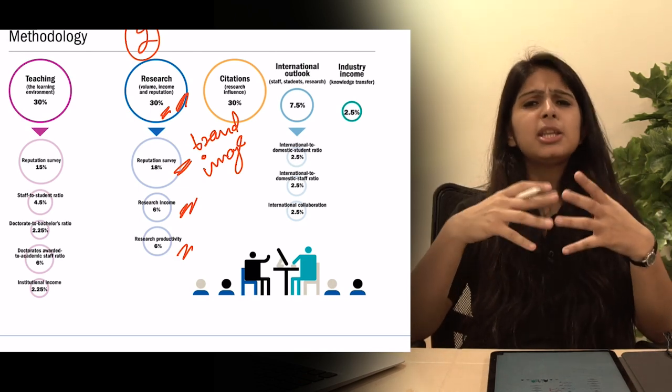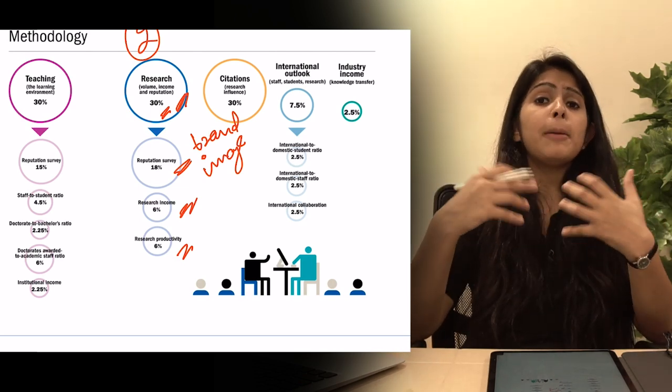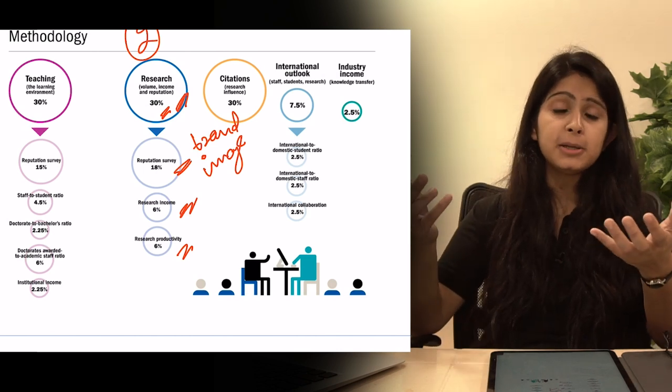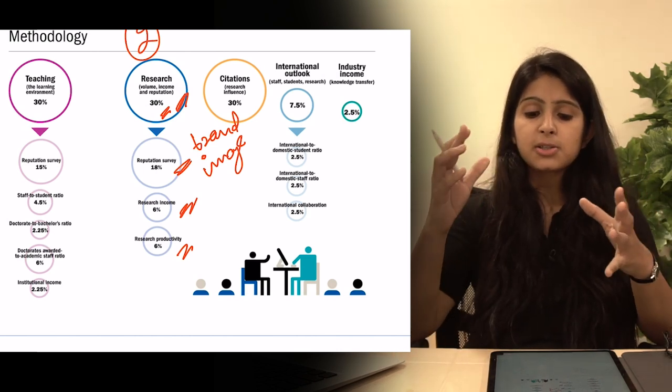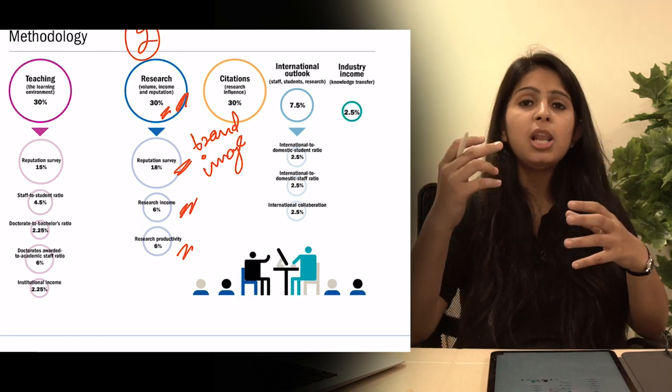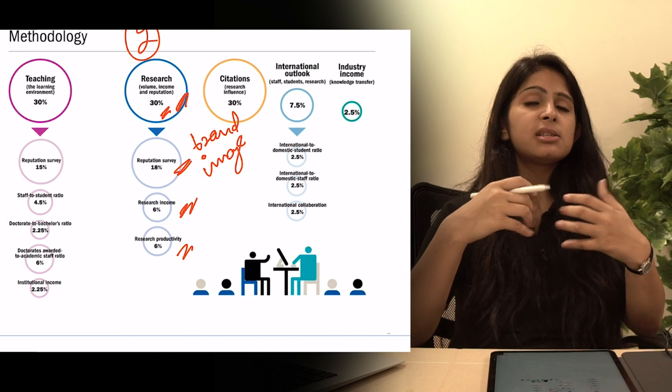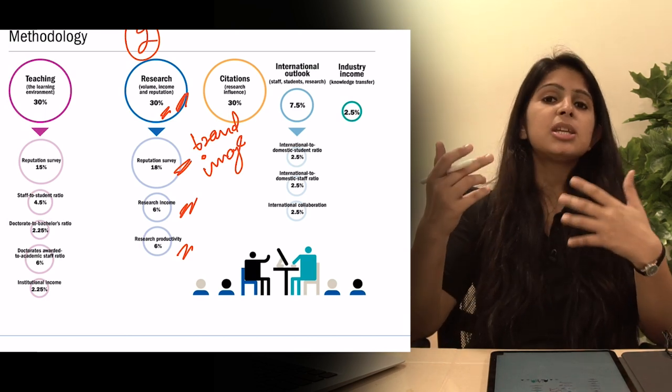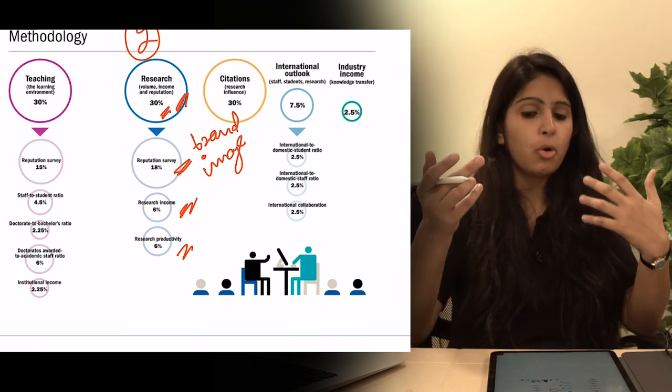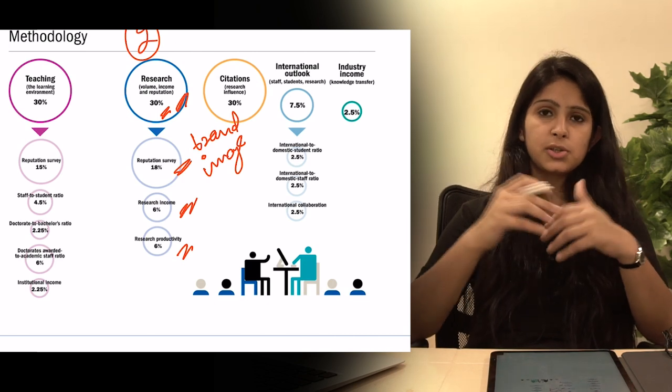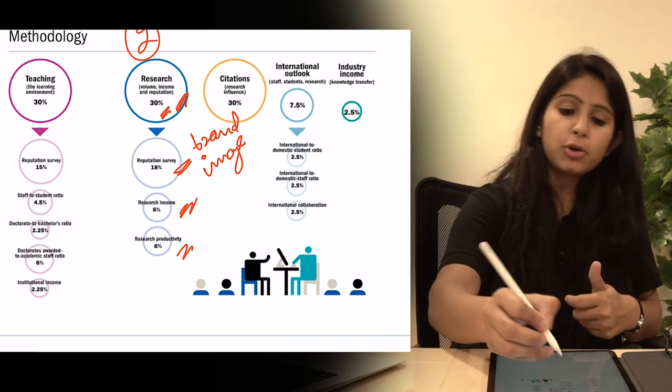So the last point is research productivity. As I told you earlier, what research a university is doing, is it useful enough that it can apply in real life? So this is what research productivity is all about - what research has real life application.